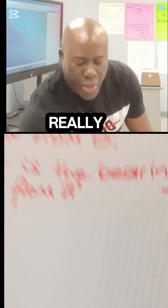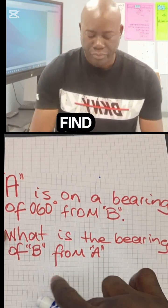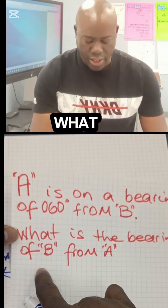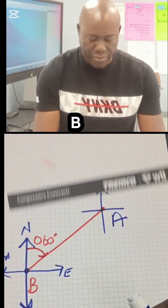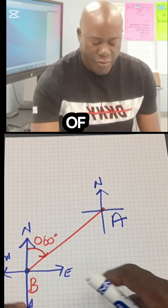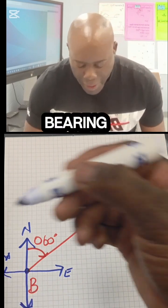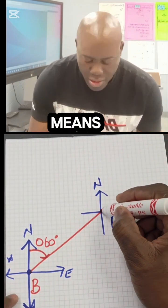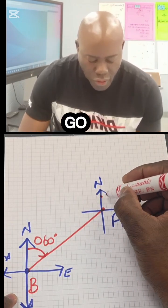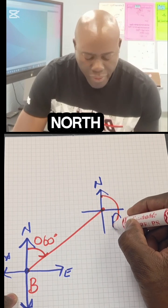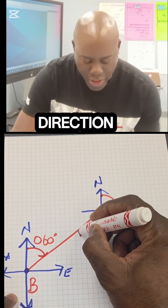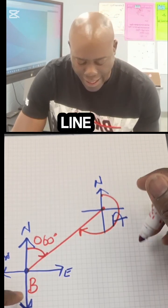Here's the thing: the question really wants us to find this. It says what is the bearing of B from A. Which means that all I'm gonna do is go to A, go to the north, and then come in a clockwise direction until it touches a line that leads back to B.